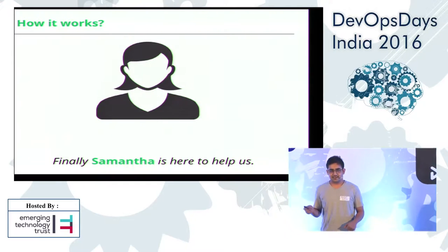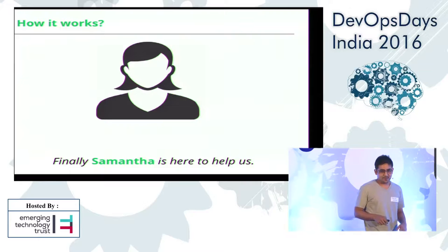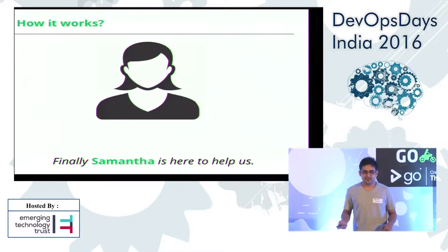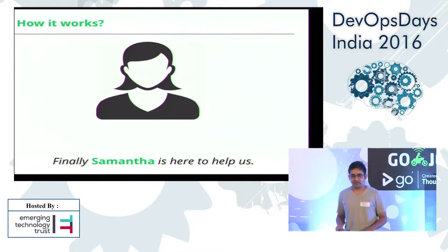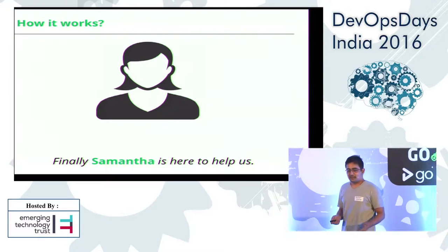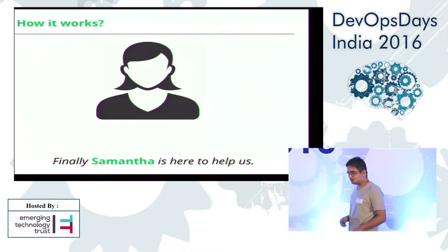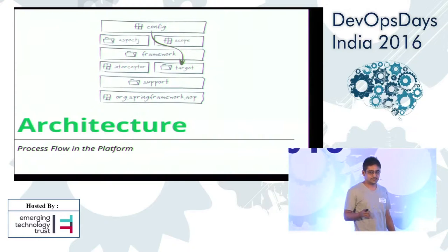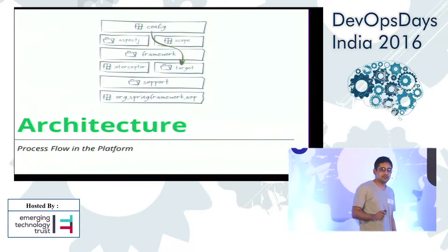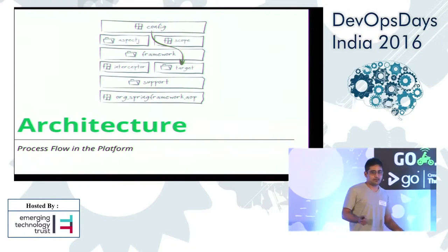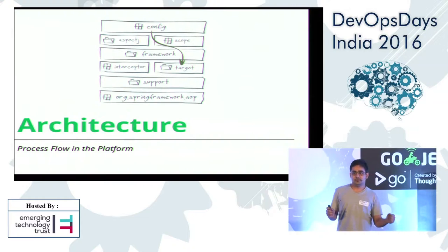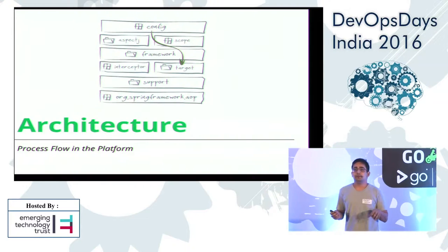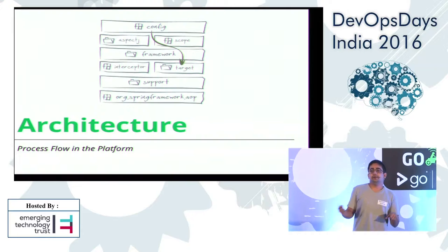From now, I will not say it's a bot — I'll say it's Samantha. She's here to help us in every possible way. Let's see — I'll come to the architecture, how Samantha actually works. Overall, Samantha listens to messages, performs actions, and replies back.